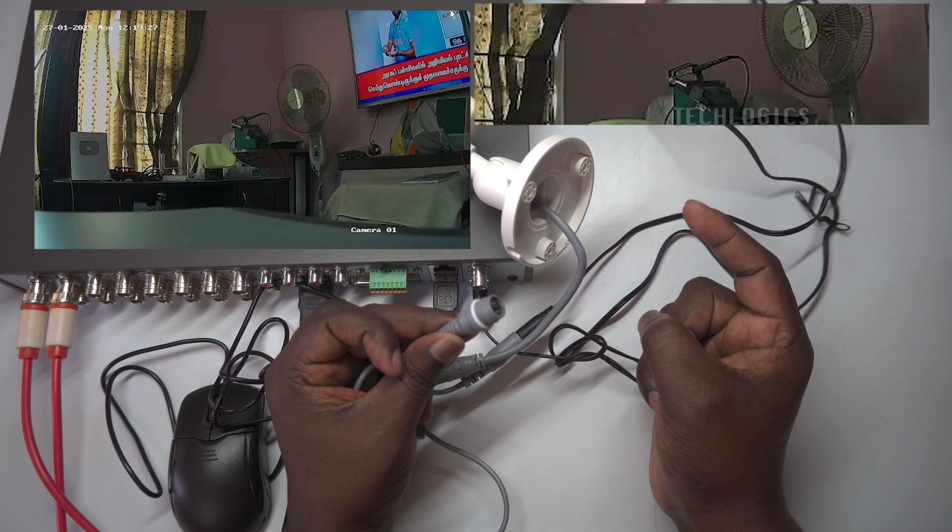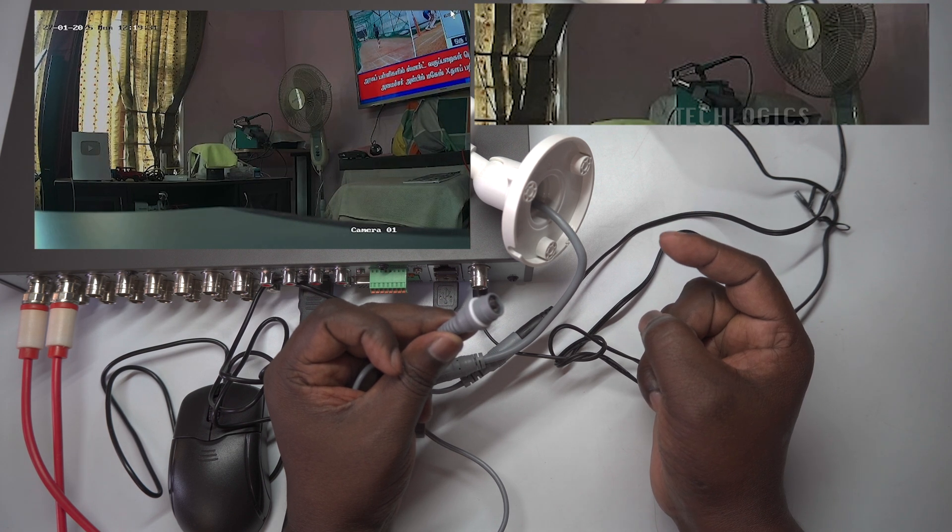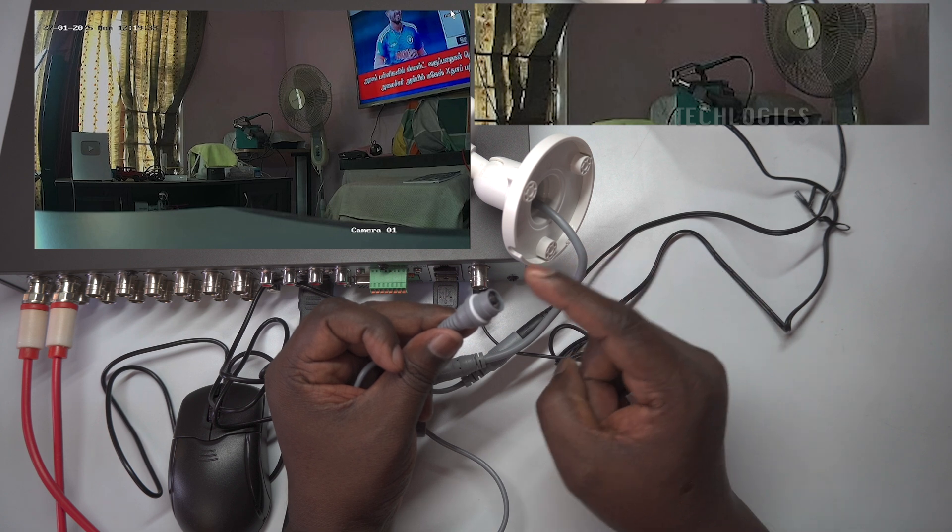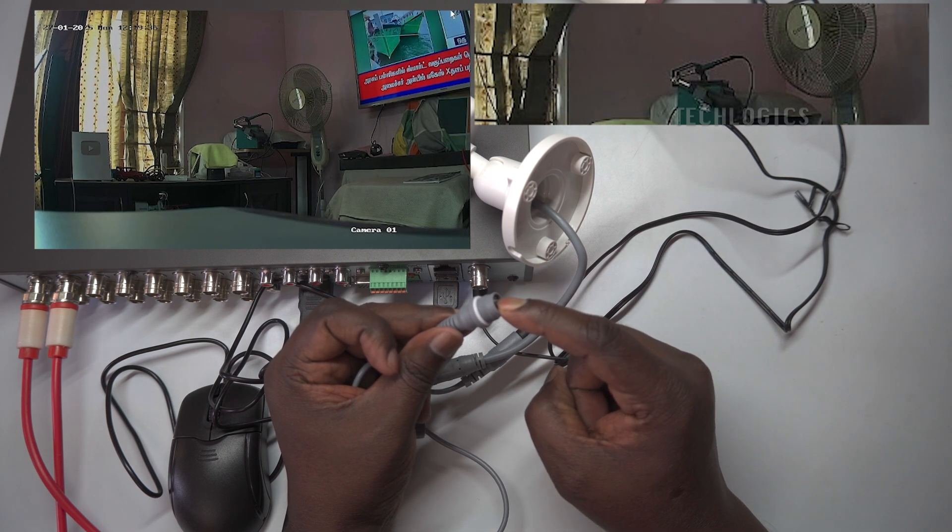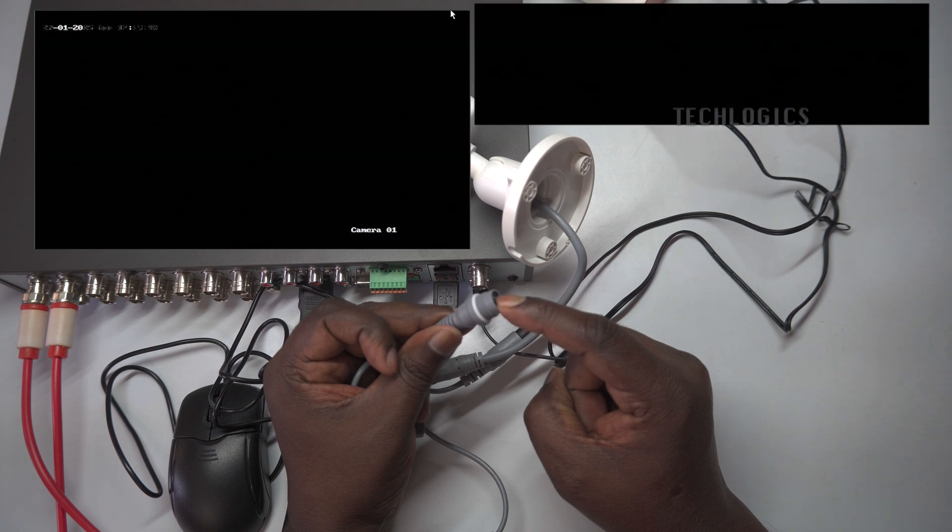When you press and hold the switch for up to five seconds, you can toggle the video signal between TVI, AHD, CVI, and CVBS, pressing and holding for five seconds each time. The setting that corresponds with your DVR will ensure a correct video feed with accurate color representation.